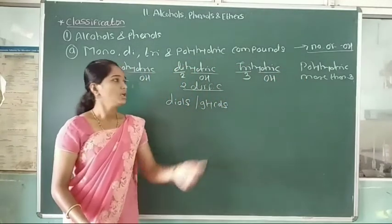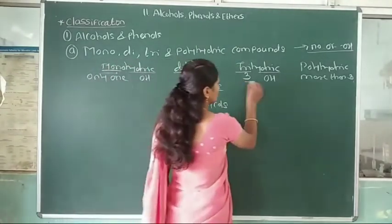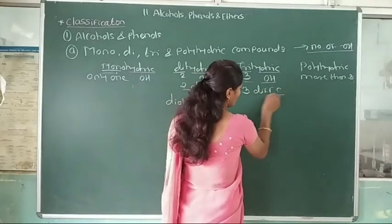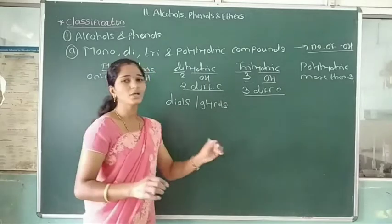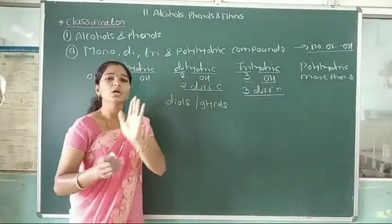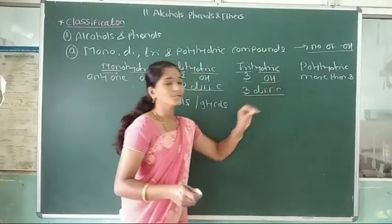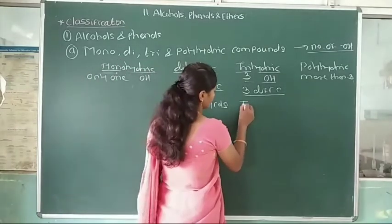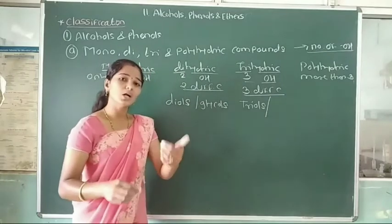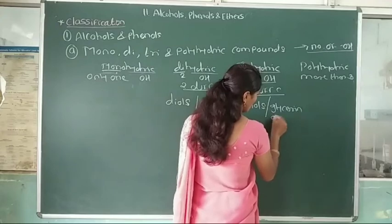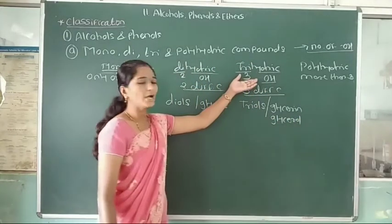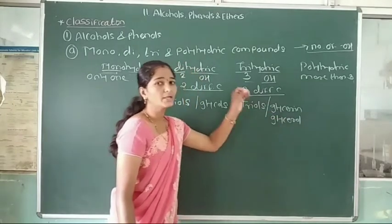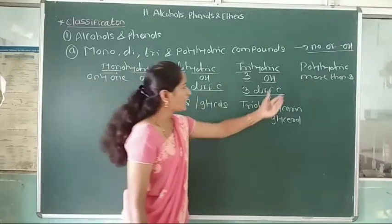In trihydric compounds, three hydroxy groups are attached to three different carbon atoms. This is called a trihydric compound. Trihydric compounds are also called triols or glycerin, which contain three hydroxy groups.